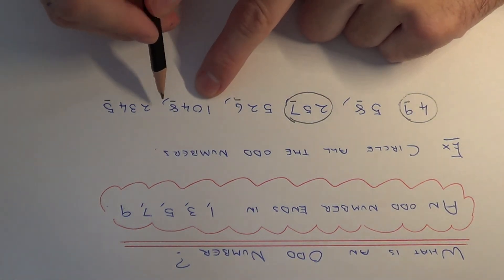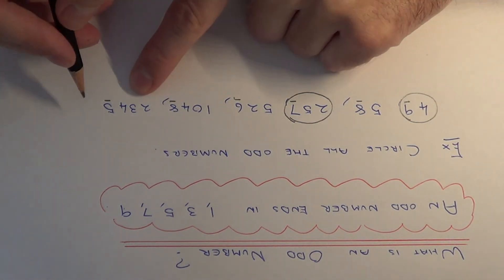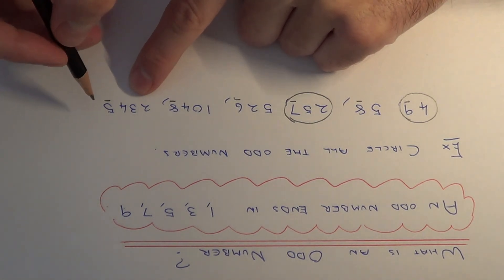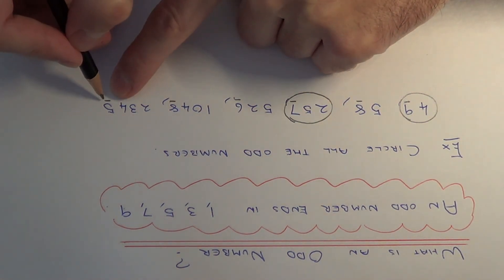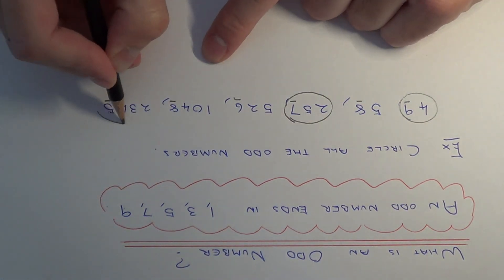The next one is 1048, again it's not on the list above, the 8, so this one is going to be an even number. And the final one is 2345, so this one ends in a 5, so again this is on the list, this is going to be an odd number.